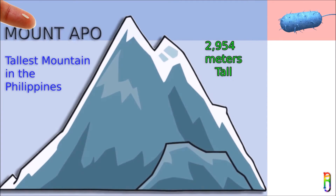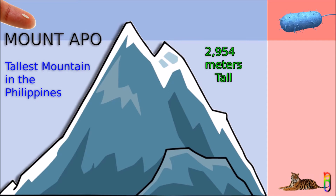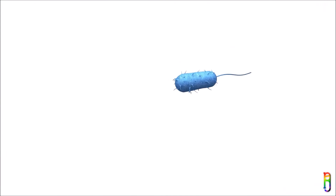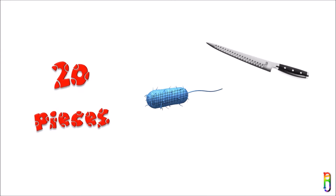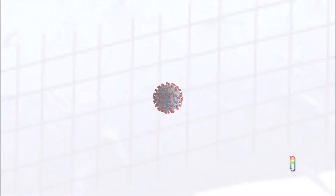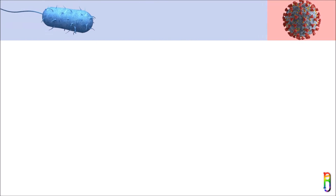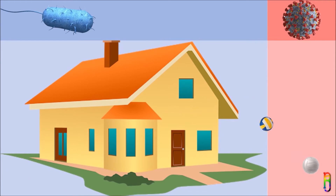For a bigger picture — if you turn a single grain of rice into the size of Mount Apo, the tallest mountain in the Philippines, a bacteria would be just the length of an average tiger. And if you slice a single bacteria into 20 pieces, one slice would be the average size of a virus. If you take an average one-story house as the bacteria, the virus would equal a standard size volleyball. That's how small they are.